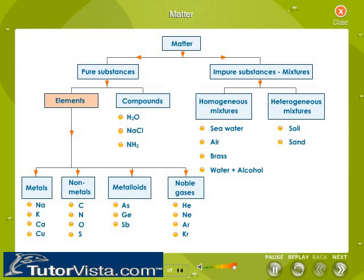Elements contain only one substance and can be grouped as metals, non-metals, metalloids, and noble gases. The slide shows examples of each of these categories.